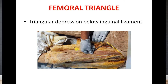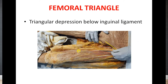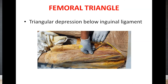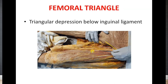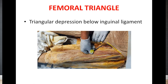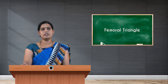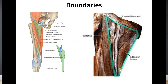The apex of the femoral triangle is directed downwards, where you see the meeting point of the sartorius muscle and the adductor longus muscle. The lateral boundary of the femoral triangle is formed by the medial border of sartorius, whereas the medial boundary is formed by the medial border of adductor longus. The base is directed above and is formed by the inguinal ligament.